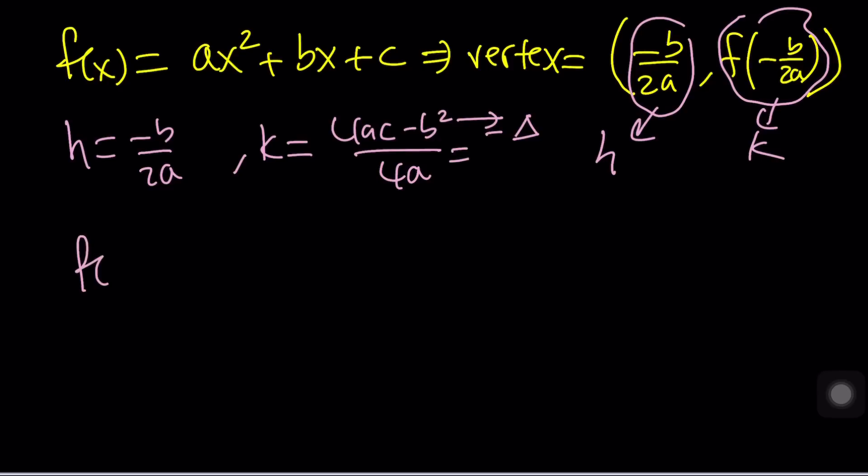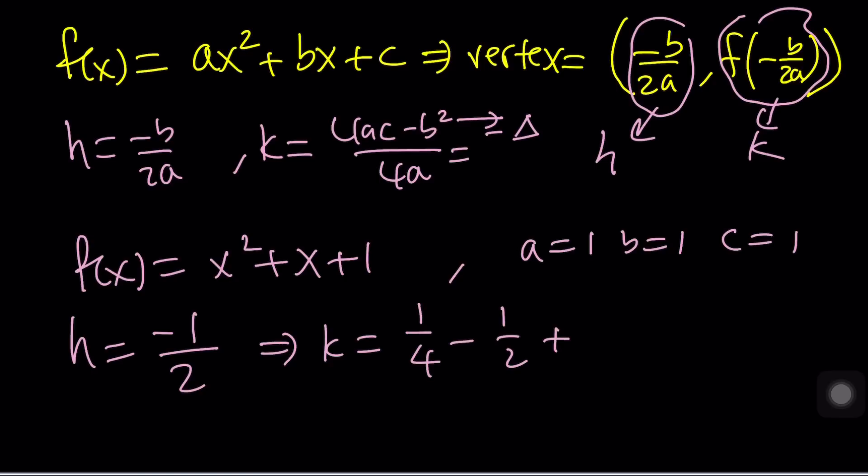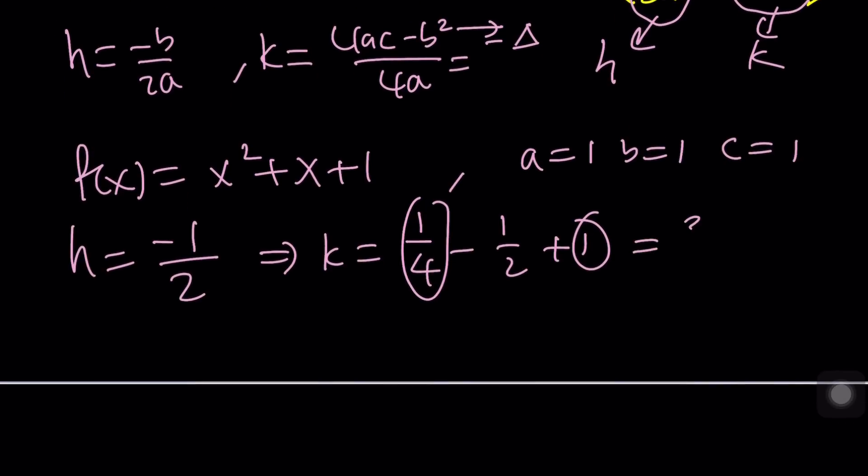So since our function is x squared plus x plus 1, in this case, a is 1, b is 1, c is 1, everything is 1. So h is going to be negative b, which is negative 1 over 2. And then k is just going to be, if you plug it in, and I would definitely add these two first, that's going to be 5 fourths minus 2 fourths is going to be 3 fourths.